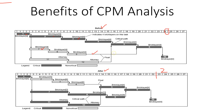The strategy the project manager is using here is to reduce the duration of the overall critical path. The way it is being achieved is by redeploying some of the resources from the non-critical activities to the critical activities. Here you can see that activity seven has four bricklayers, so the project manager has decided to move two of those onto activity two.